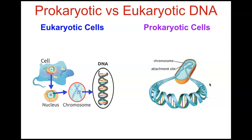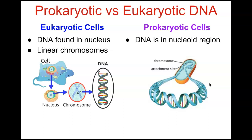Comparing DNA in eukaryotic versus prokaryotic cells: eukaryotic cells have a true nucleus and membrane-bound organelles — found in the kingdoms Plantae, Fungi, Protista, and Animalia. Prokaryotic cells, which are bacteria, lack true membrane-bound organelles and a true nucleus; their DNA is stored in a region called the nucleoid. In eukaryotic cells, DNA is found in the nucleus as linear chromosomes, while in prokaryotic cells DNA is in the nucleoid region as circular chromosomes.